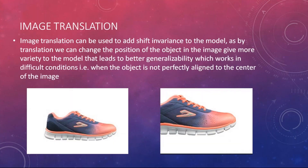Image translation takes an image and moves it in either the X direction, Y direction, or both, to get a final shifted image. For example, there is a shoe that has been displaced so that we only see a partial visibility of the shoe, yet the model still needs to identify it as a shoe. Image translation helps the model better understand how the image is being transposed.